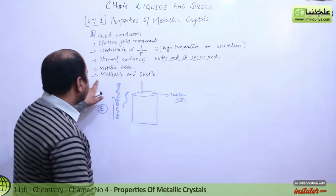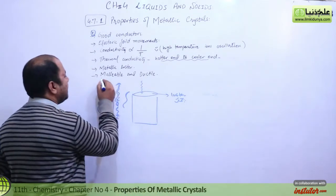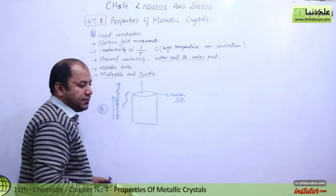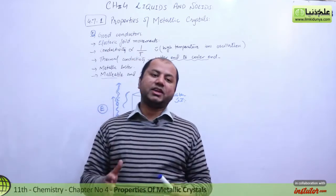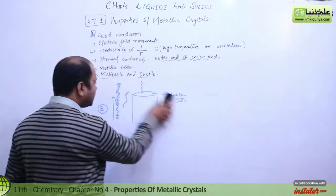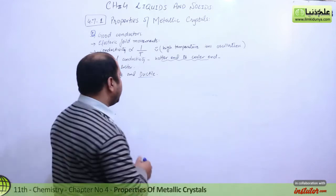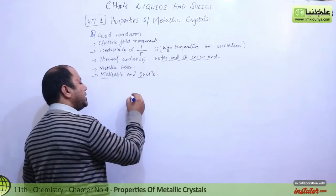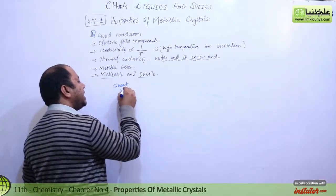Next is malleability and ductility. You've been studying this from junior classes. It's a phenomenon by which you can turn metallic compounds into sheets or wires.